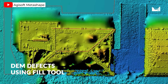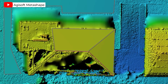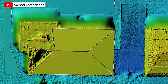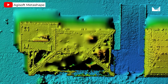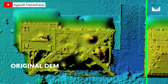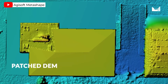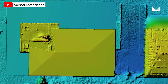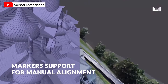Agisoft Metashape is excellent for creating highly detailed 3D models and maps. It's a desktop-based software, which means you'll need a powerful computer to run it efficiently. It's ideal for professionals who need top-notch accuracy and have the necessary hardware.